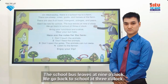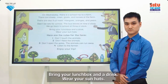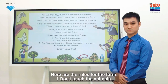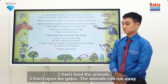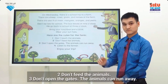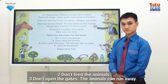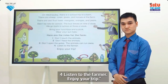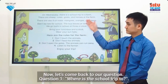We go back to school at three o'clock. Bring your lunch box and a drink. Wear your sun hats. Here are the rules for the farm: one, don't touch the animals; two, don't feed the animals; three, don't open the gates — the animals can run away; four, listen to the farmer. Enjoy your trip!